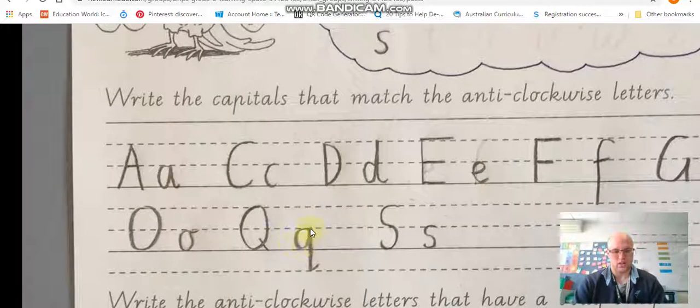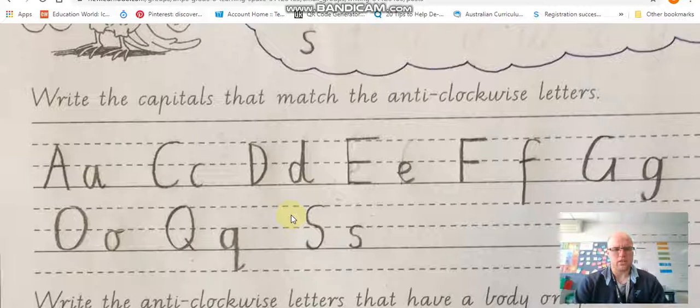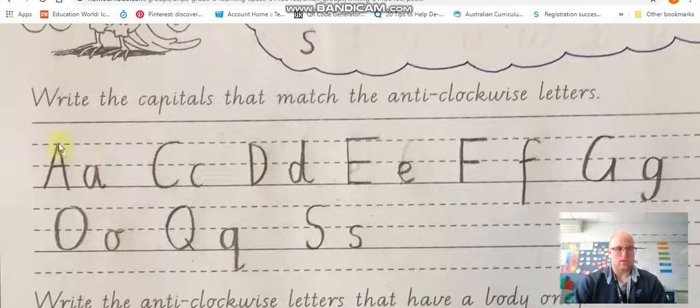Q starts in that same position. It's kind of like an O. It goes straight down and makes a little flick at the end. S one of the few letters that is the same in the capital and a lowercase. Alright but it starts on this side goes around. Don't start at the bottom. Make sure you start at the top.